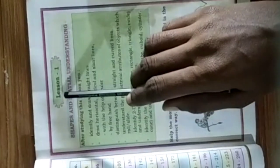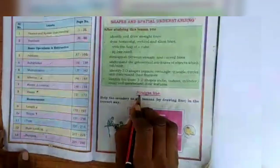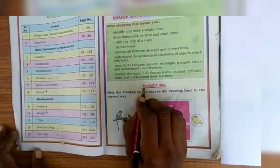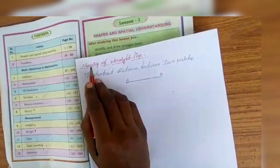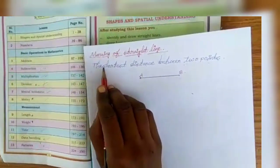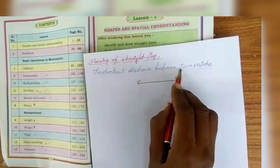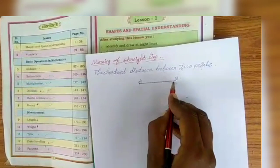Hi children, let's see our first lesson, lesson number 1, Shapes and Spatial Understanding. In this lesson, first we have to see the meaning of straight line. A straight line means the shortest distance between two points is a straight line.